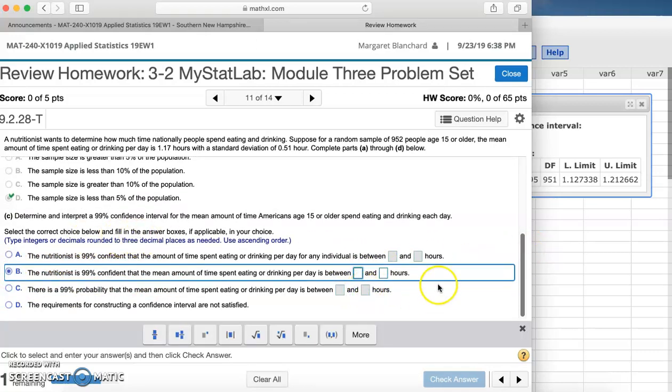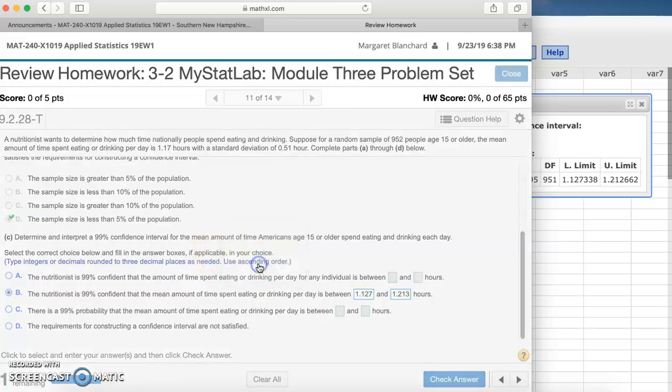And let's go ahead and put in - we want to round to three decimal places. So we have 1.127 for the lower limit and the upper limit is 1.213. Let's check our answer. Good job.